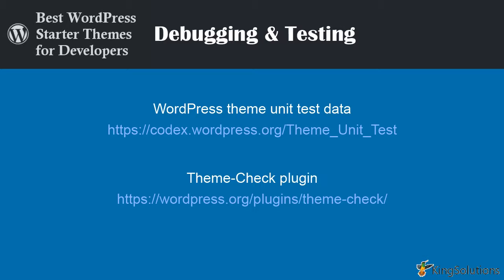To test your new theme, you can install the WordPress theme unit test data. You can use this dummy test data to see how your themes perform with different types and layouts of content. You should also install the Theme Check plugin. This plugin tests your theme for compliance with the latest WordPress standards and practices. It is an easy way to test your theme and make sure it's up to spec, running the same automated testing tools that WordPress.org uses for theme submissions. The tests are run through a simple admin menu and all results are displayed at once — very handy for theme developers.